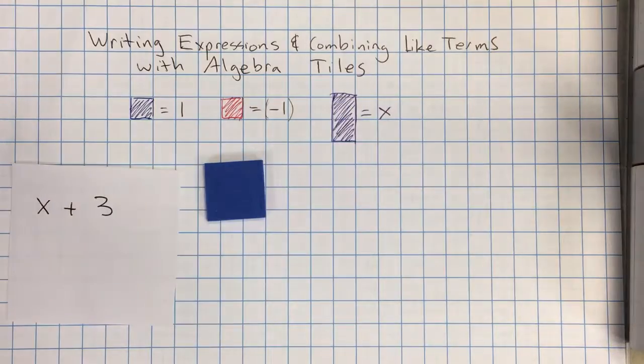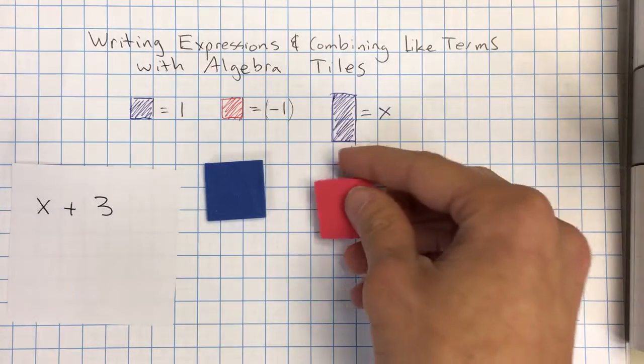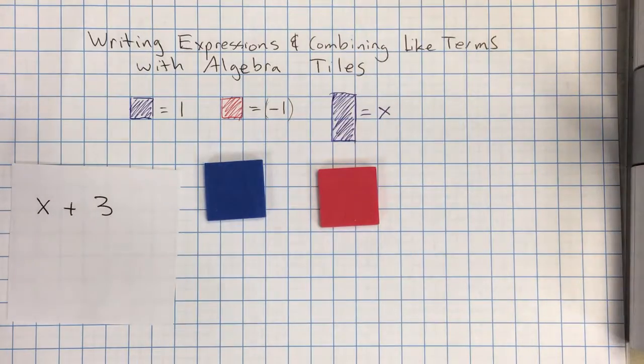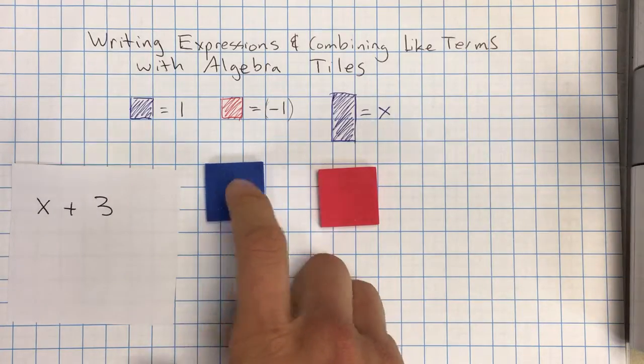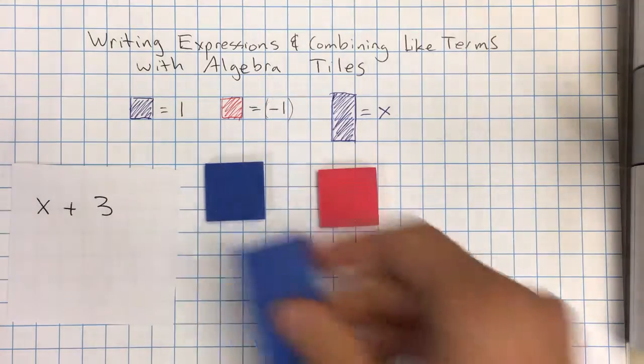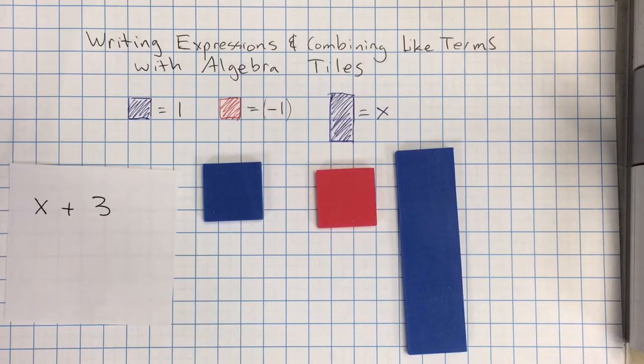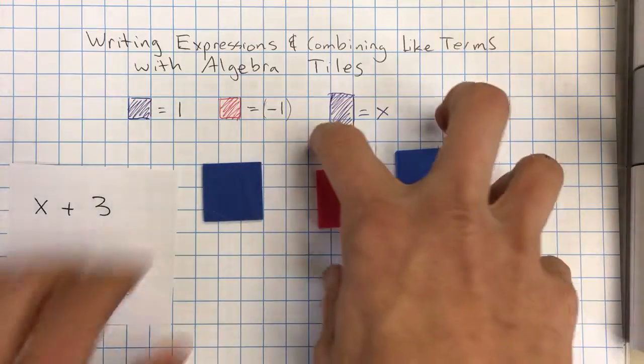The blue squares represent a whole number, a positive whole number. The red square represents a negative whole number. So this is positive 1, negative 1. And then as there's a picture up here, there's also this longer one, which represents x. It's an unknown number. Okay, and it's going to change in every equation. But right now, we're just looking at ways to show an expression.